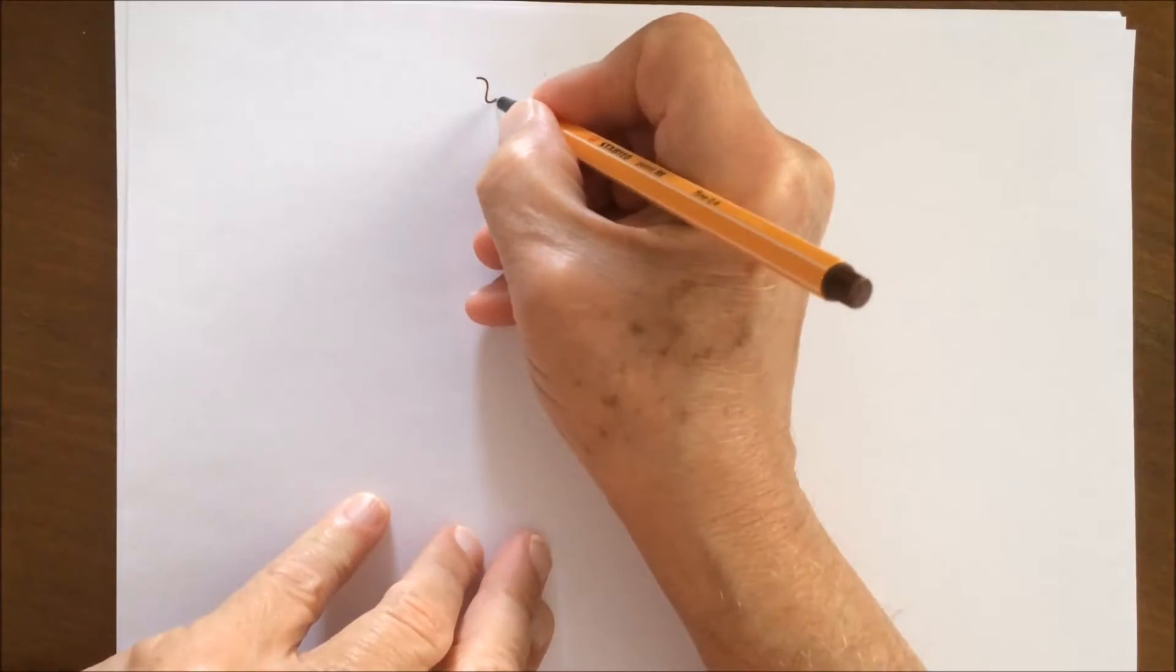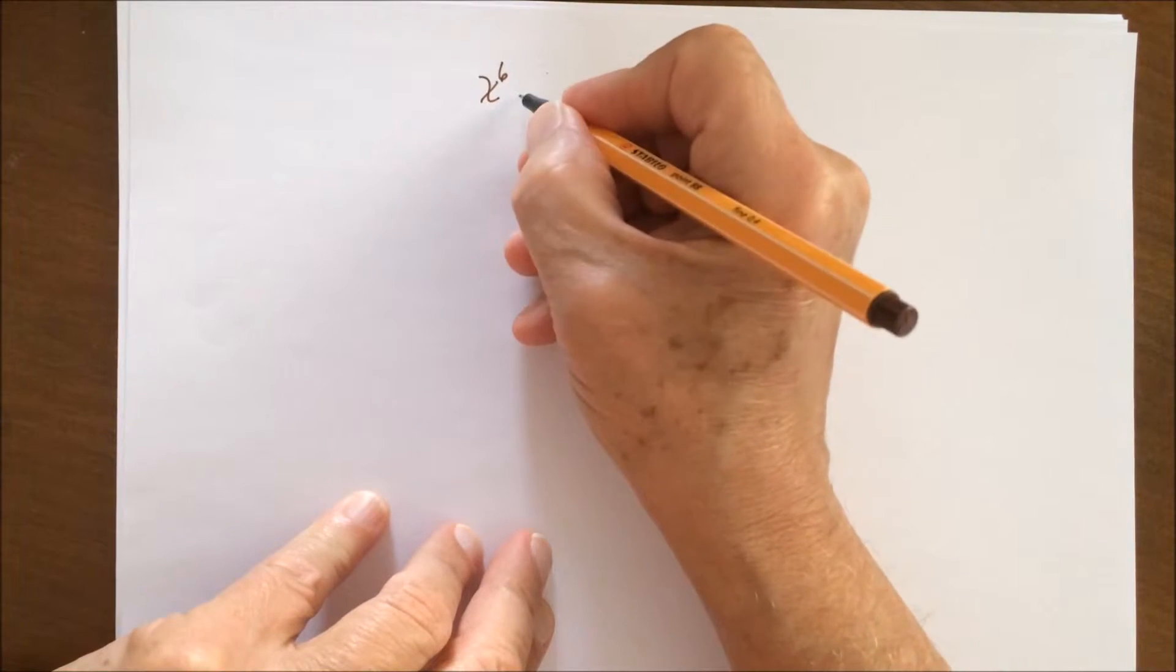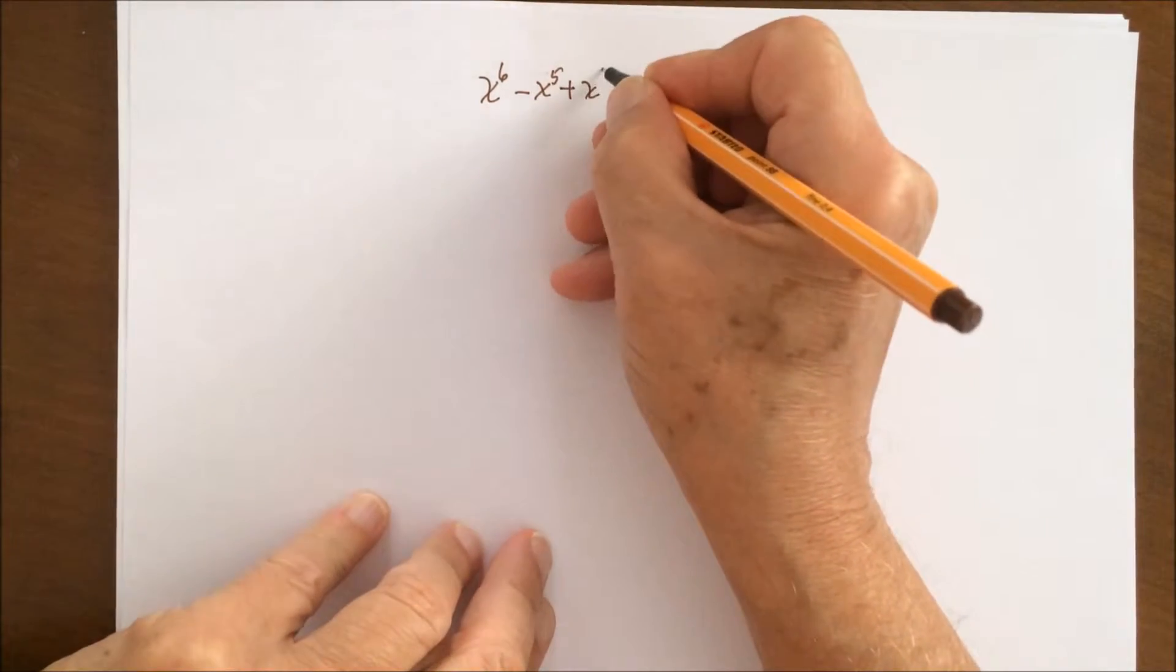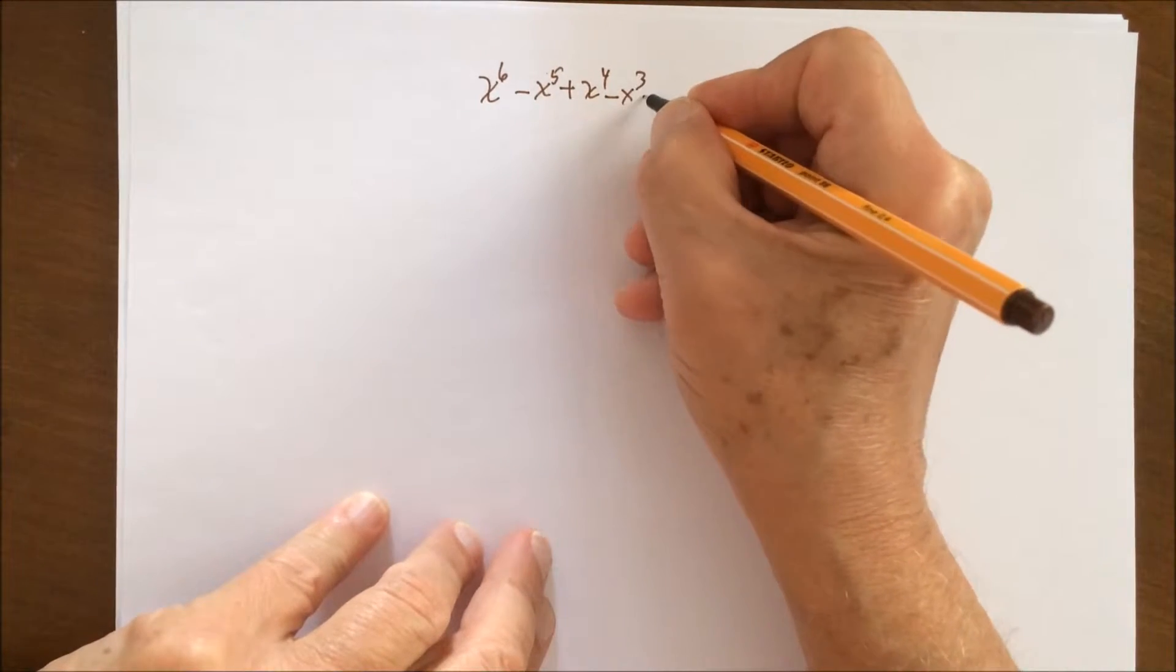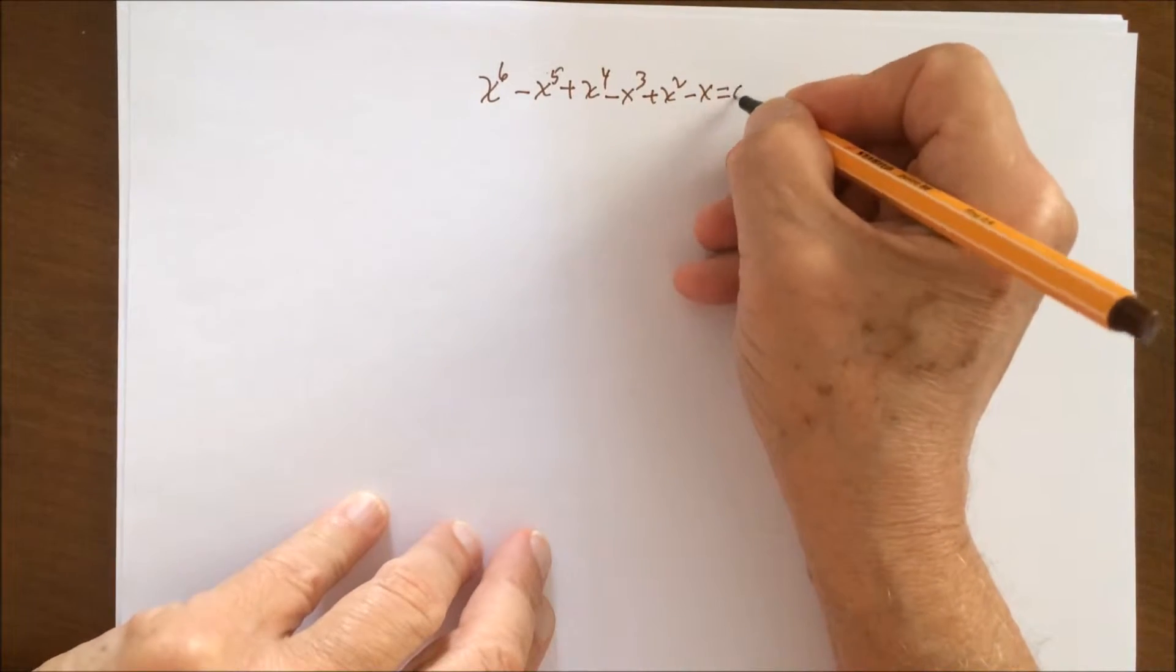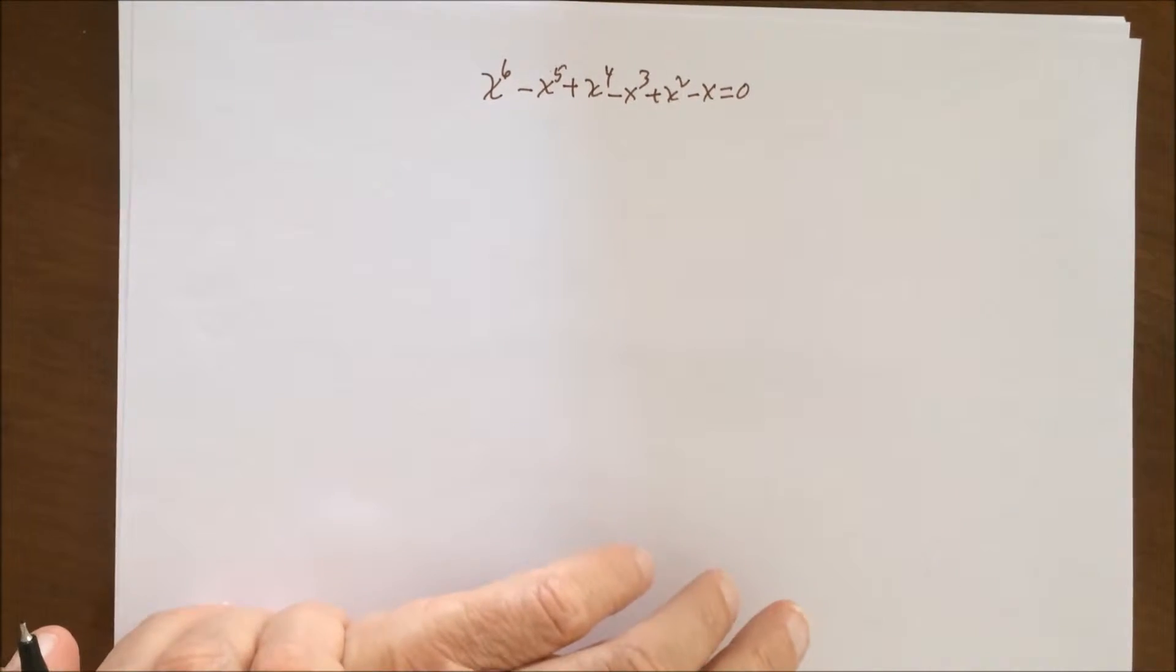We wish to consider the solutions of the following polynomial equation: x to the sixth minus x to the fifth plus x to the fourth minus x cubed plus x squared minus x equals zero. Since this is a sixth degree polynomial equation, there will be six solutions to this equation.